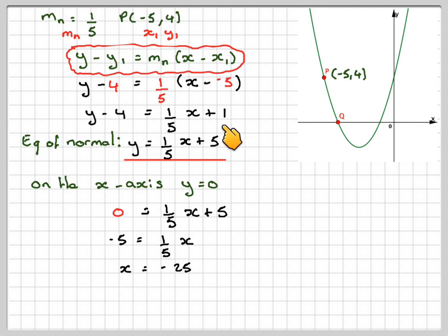It does seem like an unreasonable answer. The normal intersects the x-axis at the coordinates minus 25, 0.